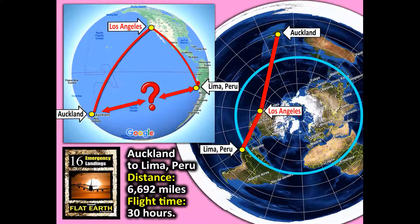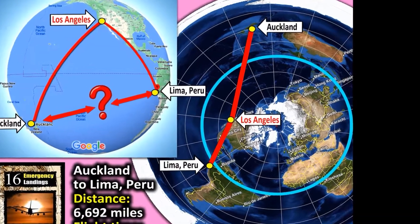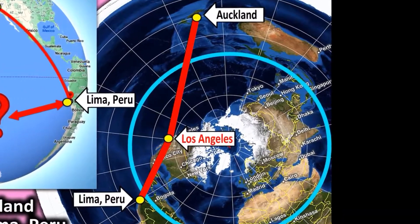Here is another example: a flight from Auckland to Lima, Peru. Even though the distance is only 6,692 miles, they have to fly to Los Angeles first and then go down to Lima. If you look at the flat Earth map, they have to cross the equator two times. The reason why? It's because the layout of the continents on a flat Earth means there is no other way.